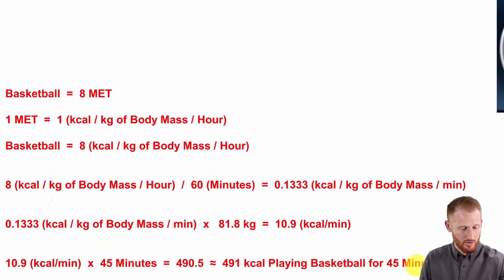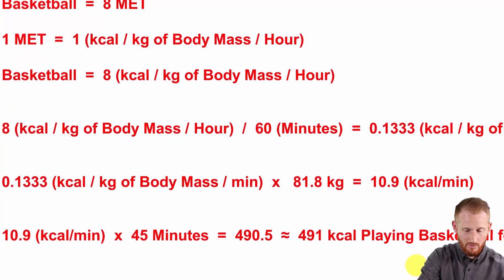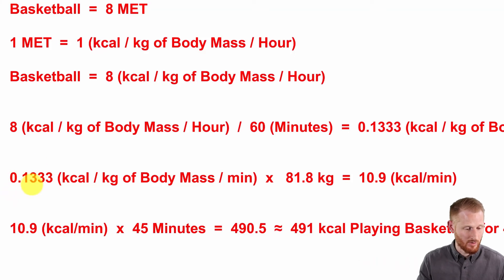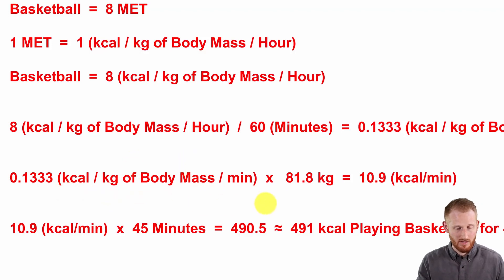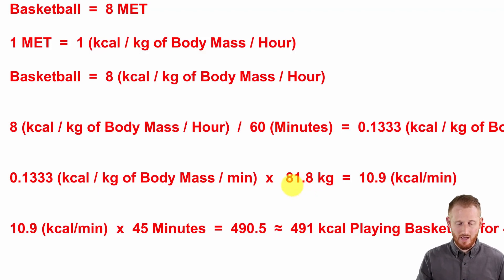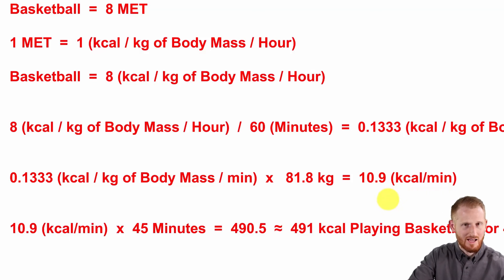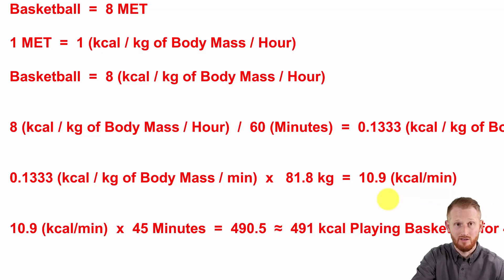We're going to change that one more time because we need to incorporate his body mass. We have that same 0.1333, and we're now going to get rid of the body mass from the equation by multiplying by his body mass in kilograms, which was 81.8 kilograms. That gives us 10.9 kilocalories per minute. So for every minute of activity he did, it was 10.9 calories — which is a fairly high calorie burn rate, but we went with a more liberal estimate of basketball.